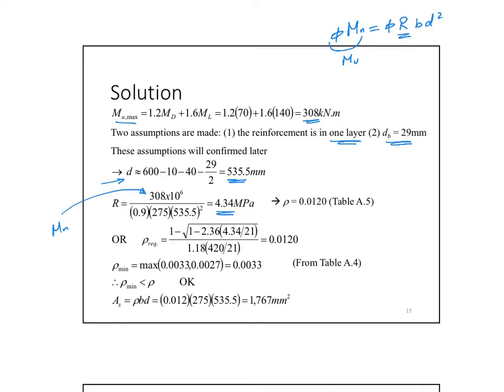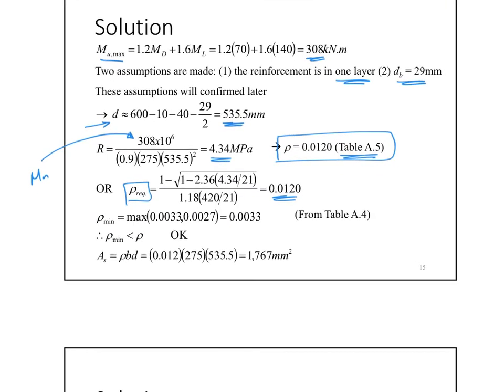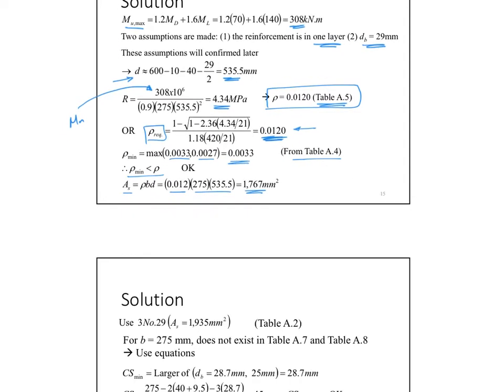So what did I do? I substituted this with MU, and then I found R. Here is R. It became 4.34. We can either use the table or calculate it from the equation. This is brought up from the table A5 or use the equation. It will give the same answer. And you can go to table A5 and check it yourself with the specified F prime C and F yield and the rho and find the rho. Now, we have to check this rho against rho minimum. Now, I need that much of steel. How much steel do I need? 0.012 steel ratio. I have to check it against rho minimum. Rho minimum is the maximum of these two numbers from the equations. We can simply pull them out from the table A4. Rho was bigger than rho minimum. It's okay. We can proceed. And then find area steel. Just rho times BD. That is 1765 millimeters squared.